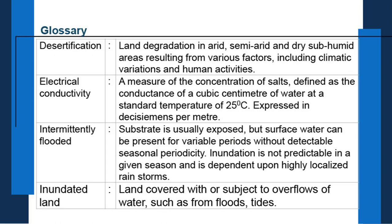Some difficult words: Desertification — land degradation in arid, semi-arid and dry sub-humid areas resulting from various factors including climate variations and human activities. Electrical conductivity, EC, normally written as ECe — a measure of the concentration of salts defined as the conductance of a cubic centimeter of water at a standard temperature of 25°C expressed in deci-siemens per meter.